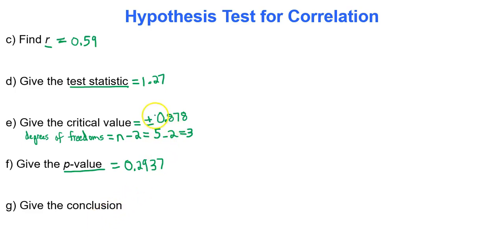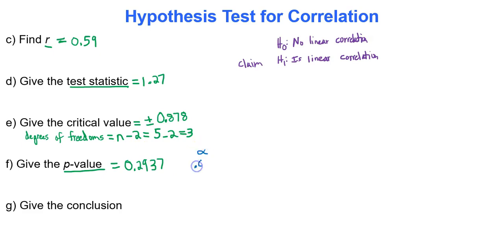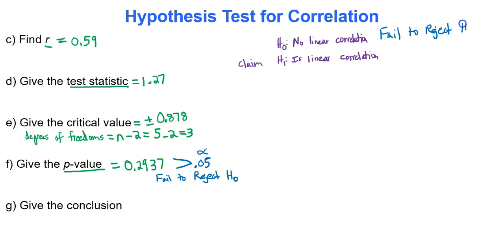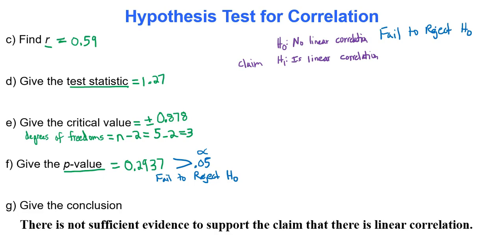For our conclusion, we compare the p-value of 0.2937 to alpha of 0.05. The p-value is clearly greater than alpha, so we fail to reject the null hypothesis. Since we fail to reject the null — which says there is no linear correlation — we cannot support our claim. The proper conclusion is: there is not sufficient evidence to support the claim that there is linear correlation.